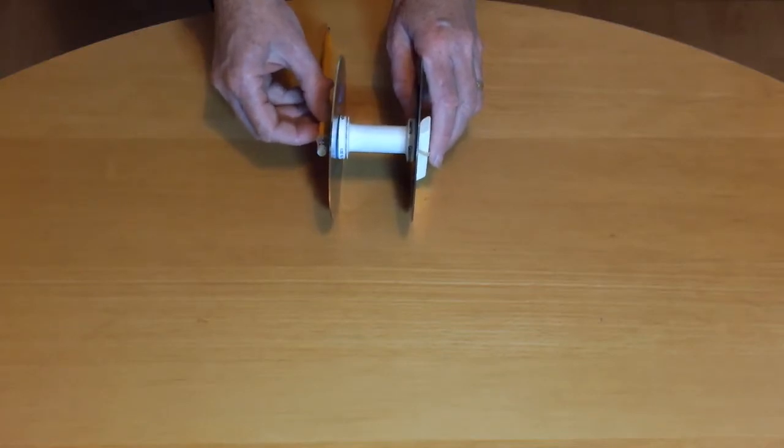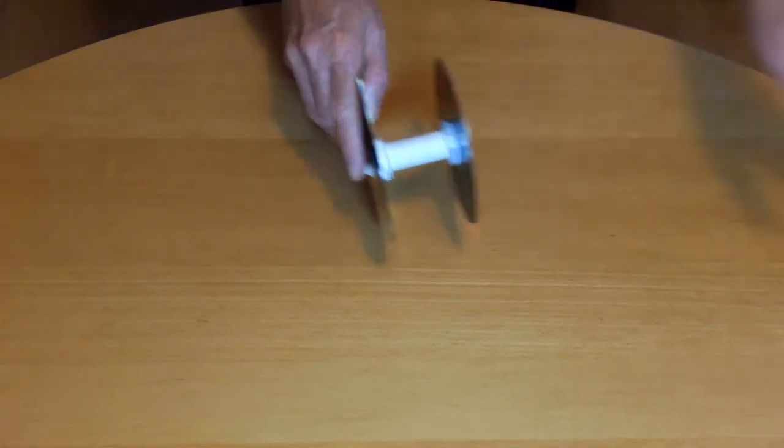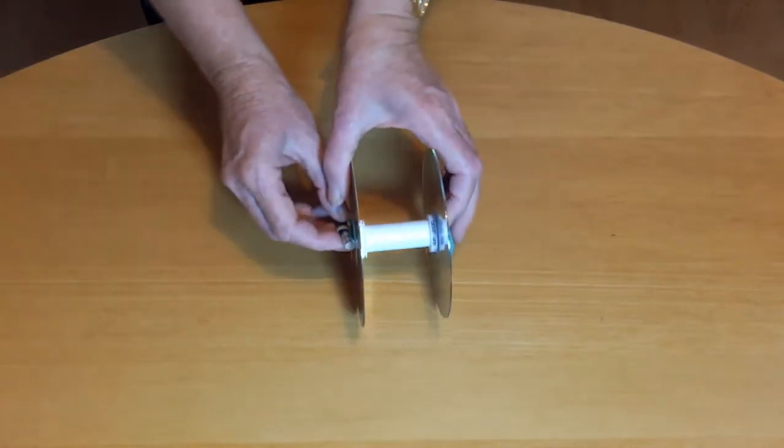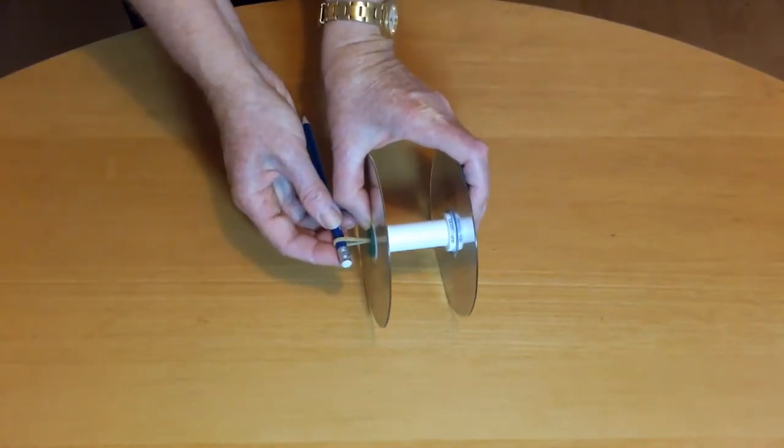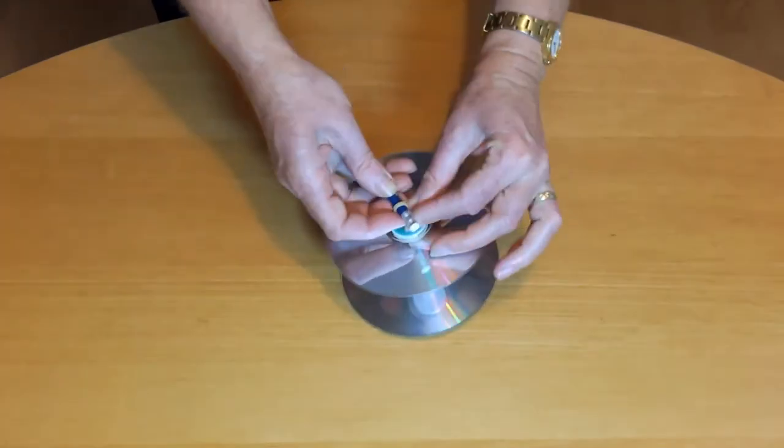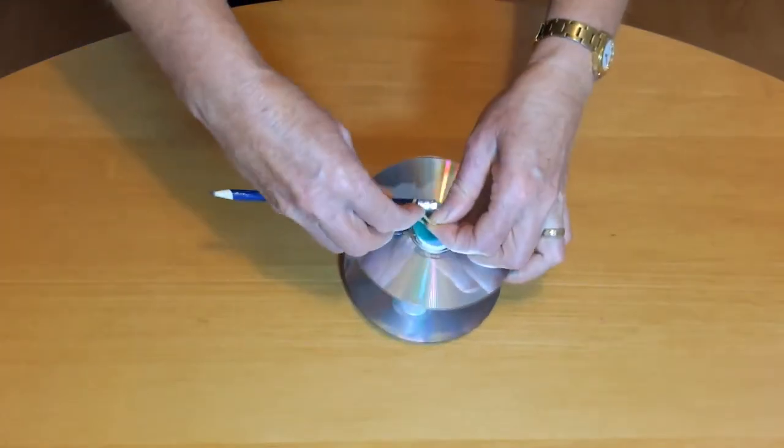There should be a gap between the CD unit and the pencil but if there's a gap of more than about 10mm, like this one, then you can wind the rubber band around the pencil again like this to take up some of the slack.